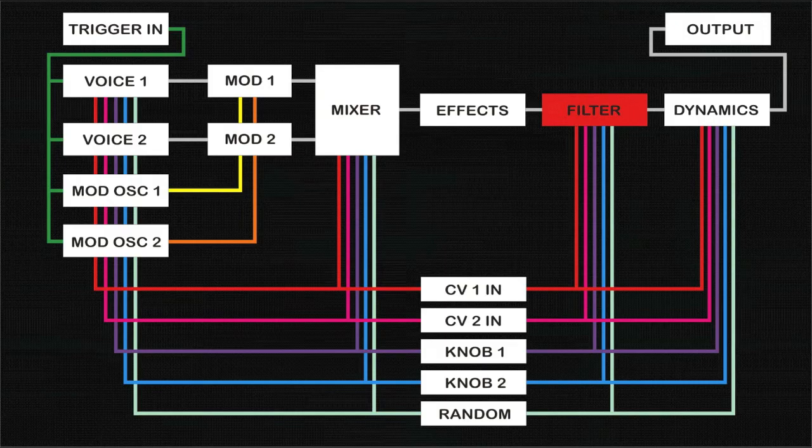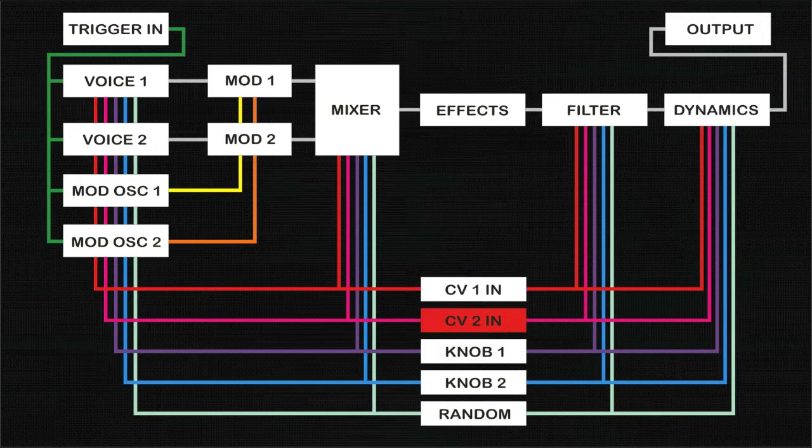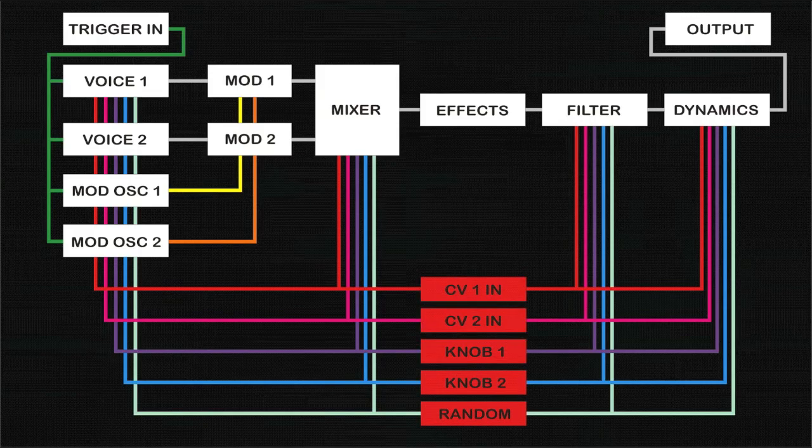Audio is then routed from the filter output to the dynamics section. This dynamics section provides a voltage-controlled amplifier where sound levels can be defined or modulated by external CV 1 or 2, knob 1 or 2, randomized, or multiple combinations of these sources.